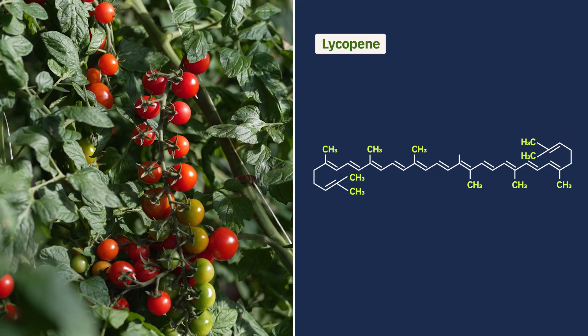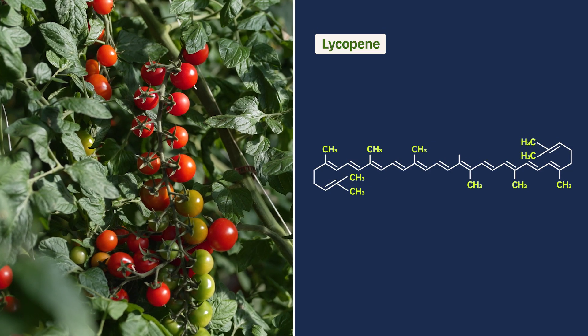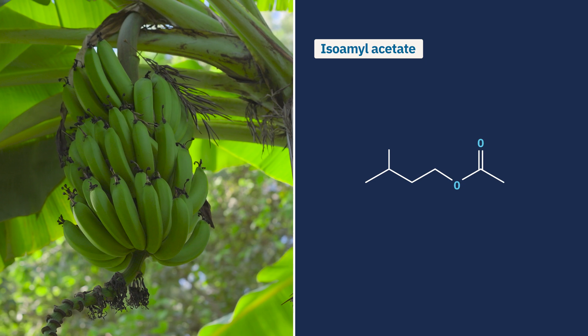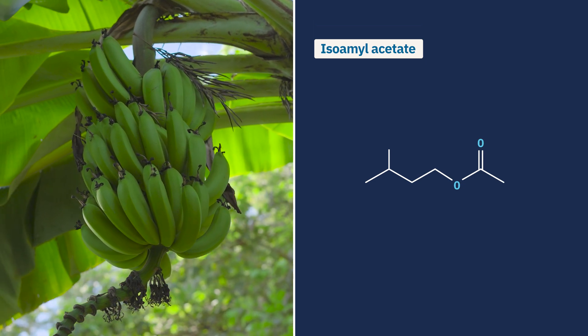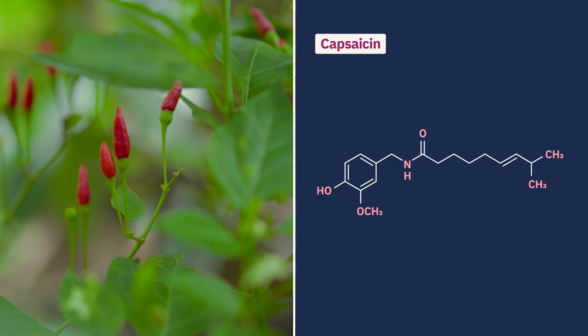Specialised metabolites play a role in food quality as key contributors to the flavour, colour, aroma, and sensory experience of food, along with its nutritional value and health benefits. For instance, the bright red colour of tomatoes comes from lycopene, a specialised metabolite with antioxidant properties. The distinct aroma of bananas comes from a secondary metabolite called isoamyl acetate. The hot taste of chili peppers is due to a compound called capsaicin, another specialised metabolite. These compounds not only enhance the sensory experience of food, but also offer health attributes such as reducing inflammation or acting as antioxidants.